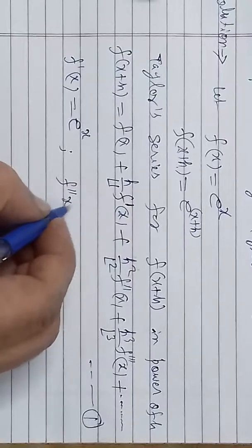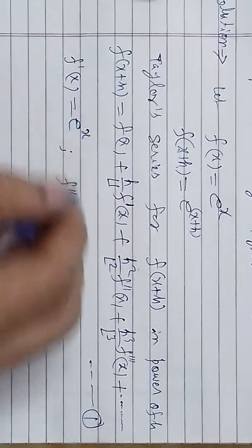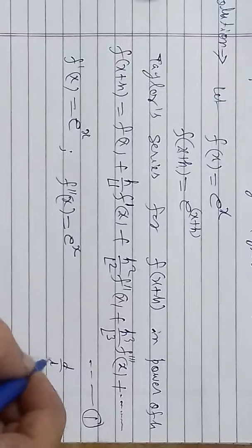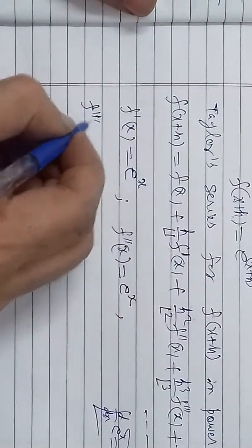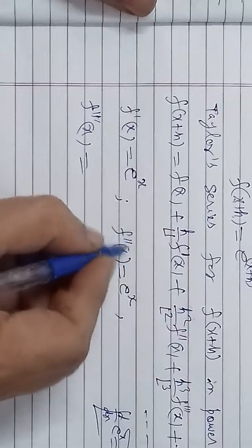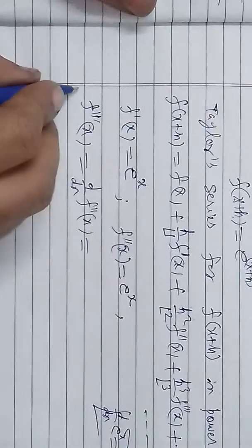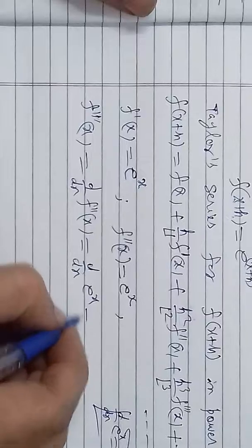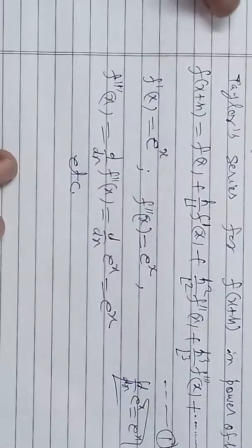Agar hum iska second time differentiation nikalein, to pehle wala differentiation dubara x ke respect mein differentiate karenge — koi effect nahi padta, kyunki e^x ka differentiation e^x ke hi equal hota hai. Isliye hum jitni bhi baar differentiation nikalein, chahe second ya third bar, sab ki value e^x hi rahegi.